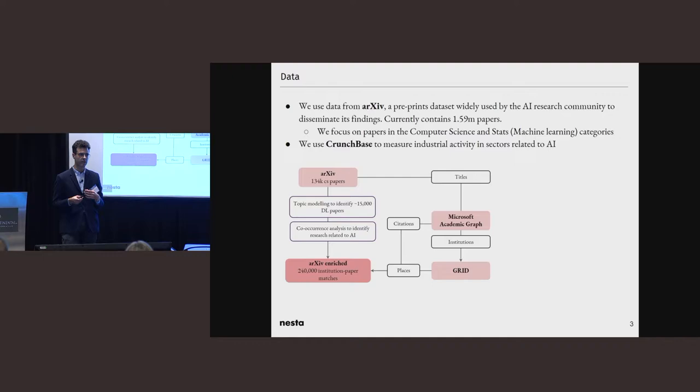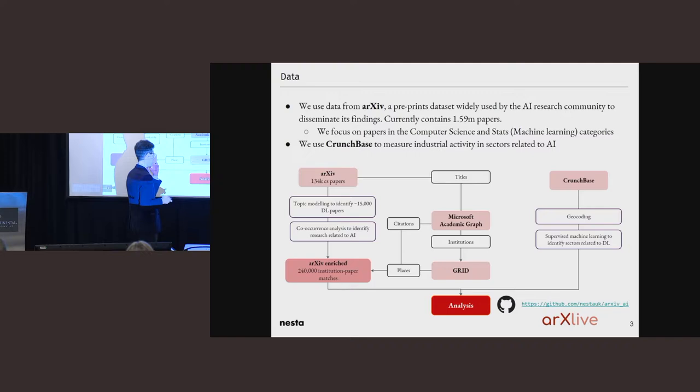When working with Crunchbase, we're going to compare the descriptions of companies in Crunchbase using machine learning with the abstracts of papers to identify which of the sectors in Crunchbase are more related to deep learning research. We put all of this together to analyze and all of the codes in GitHub if you want to get the data. We're building a system called ArcLive, which is going to keep updating this data in real time. Hopefully, this is going to become a resource for researchers out there who want to use these methods.